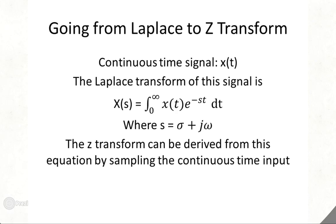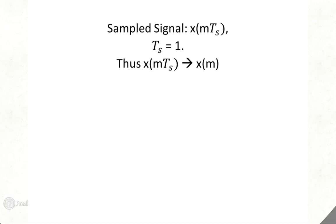The Z-transform can be derived from this equation by sampling the continuous time input. So the sampled signal is X(mTs), and we set Ts equal to 1. Thus, X(mTs) just becomes X(m). We plug this into the Laplace transform, and we end up with the second equation shown on the screen.